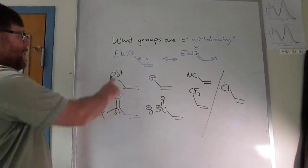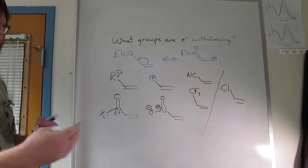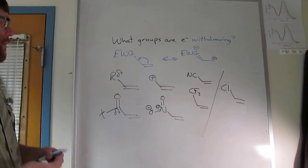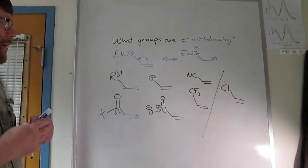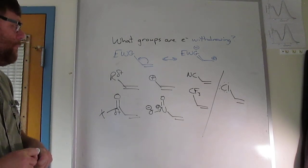If you have an electron-withdrawing group bonded to the alkene, you'll slow that alkene from giving away electrons. If you have an electron-donating group bonded to the alkene, you'll accelerate the rate at which the alkene donates electrons.